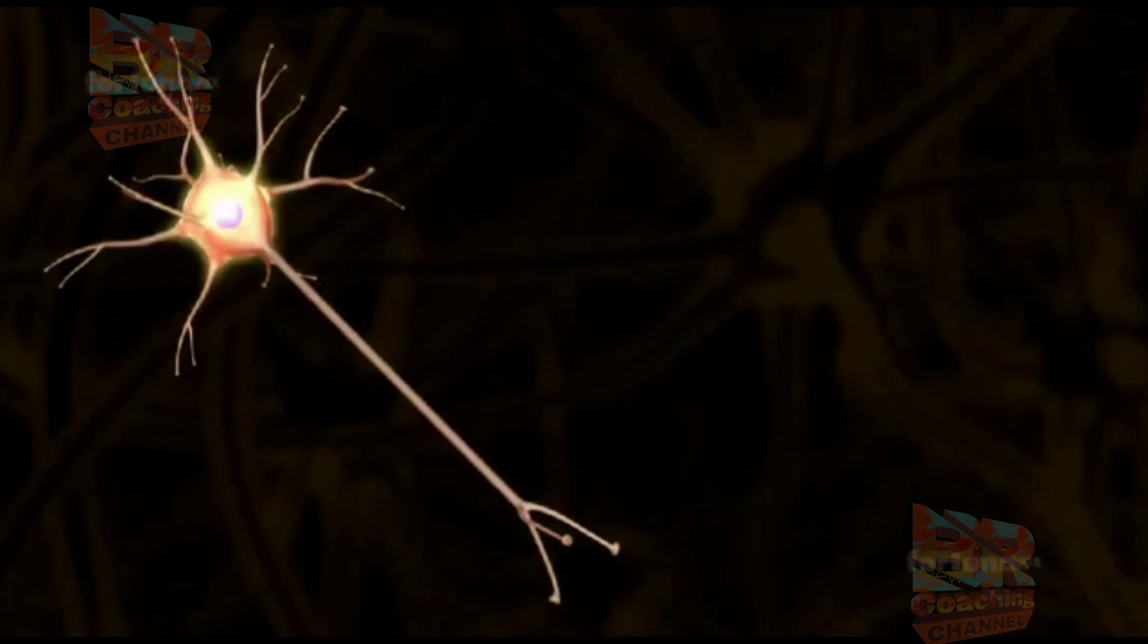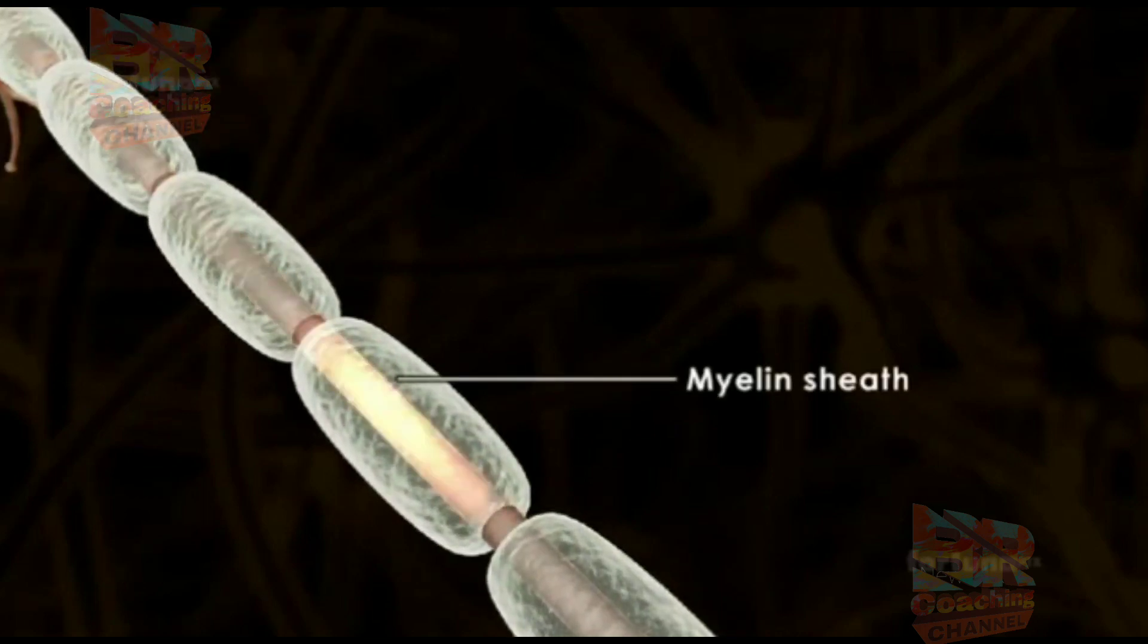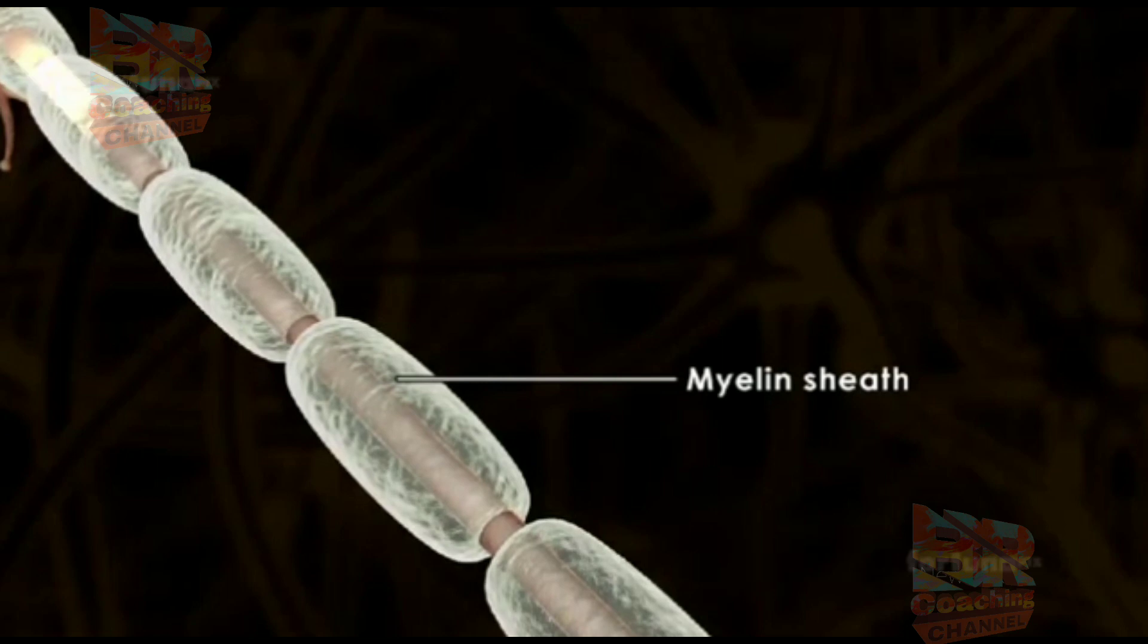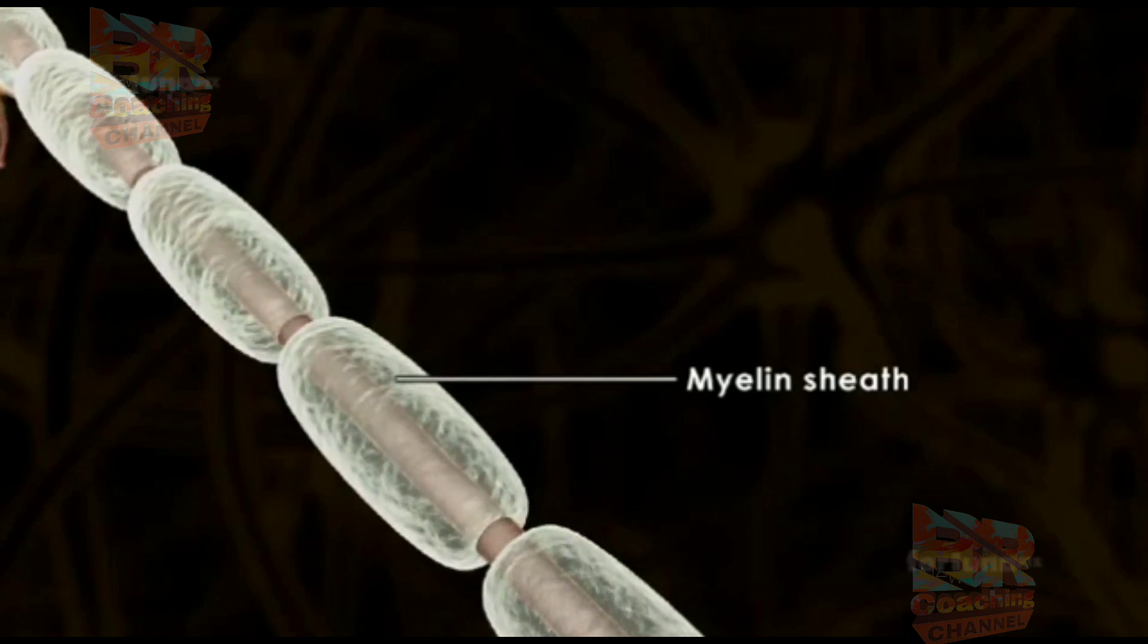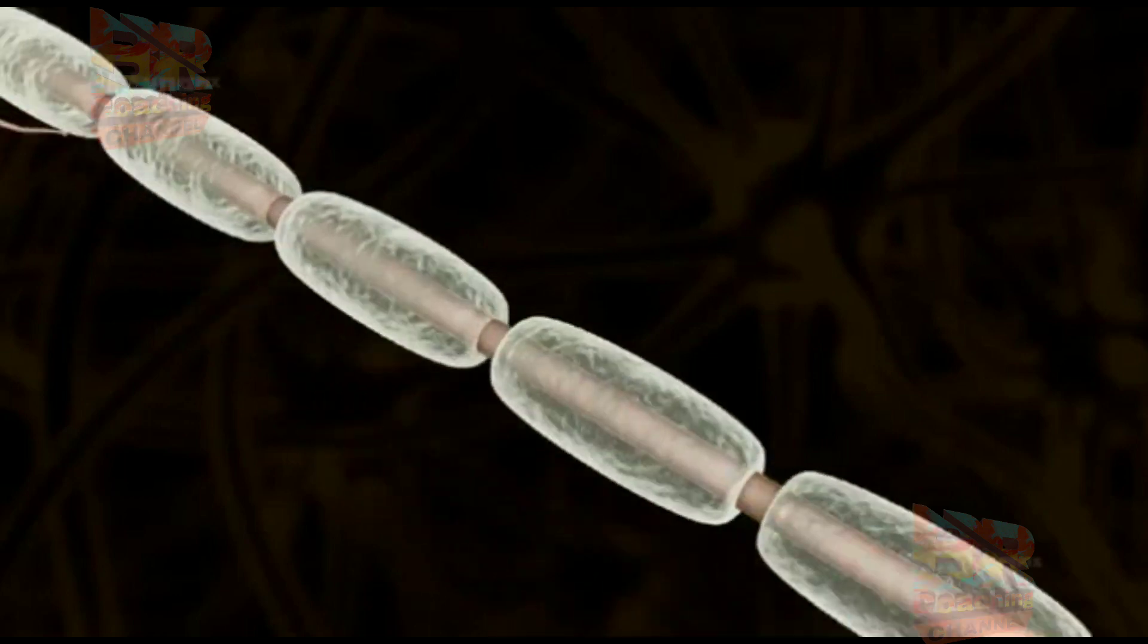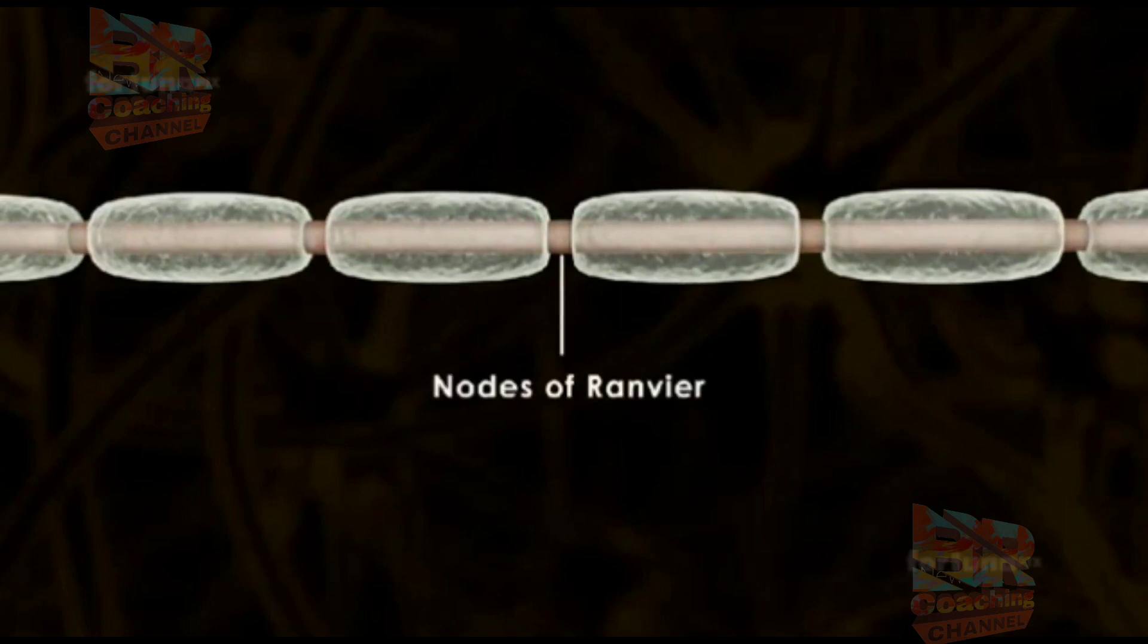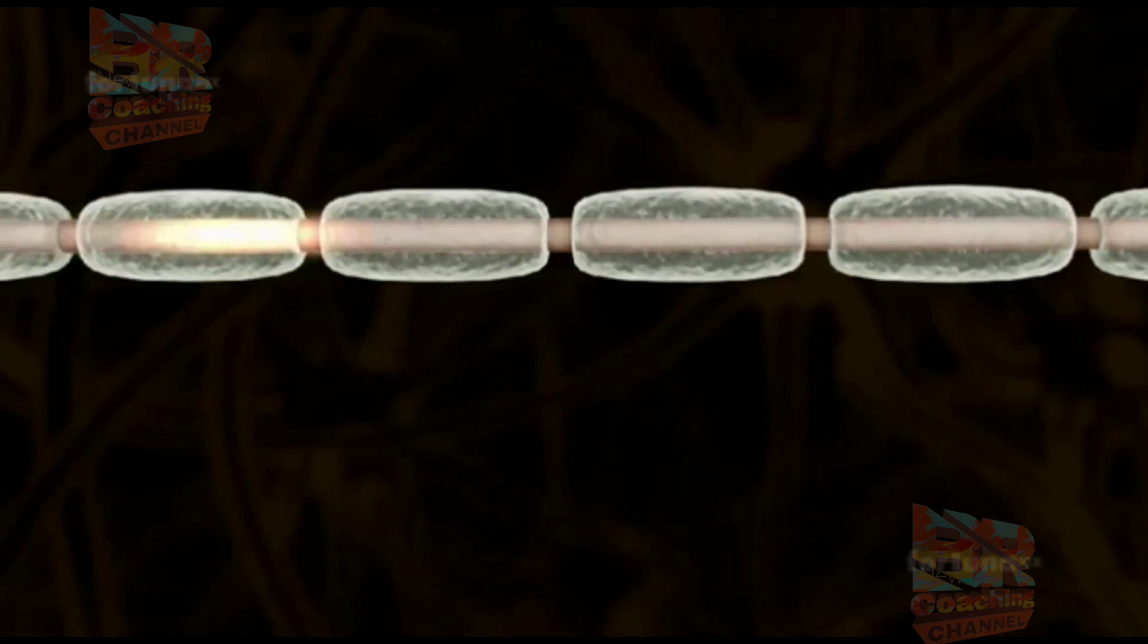A fatty white coat known as a myelin sheath usually covers longer axons. The sheath serves to insulate the axon. However, it is not continuous along its length. There are many gaps known as the nodes of Ranvier. These gaps allow electrical impulses to jump from one node to the next, thus increasing the speed of its transmission.